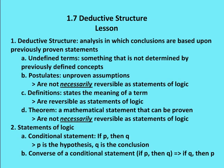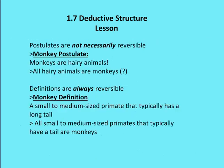Definitions are statements based on the meaning of a term. For example, the definition of a monkey would be reversible as a statement of logic. A definition of a monkey is a small to medium-sized primate that typically has a long tail. So definitions are always reversible — that means all small to medium-sized primates that typically have a tail are monkeys.